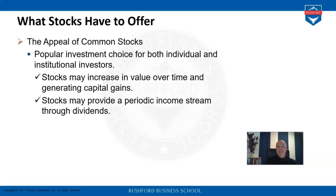What is the appeal of common stocks? We have seen that there are two ways to earn money on common stocks — especially for individuals but also for institutional investors. The value increase of a stock is the most interesting part; we call it a capital gain. For example, we buy the stock for $50 and sell it ten years later for $100, giving us an average return of seven percent per annum.